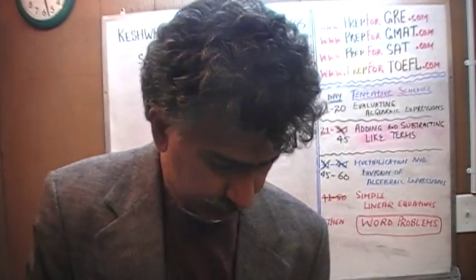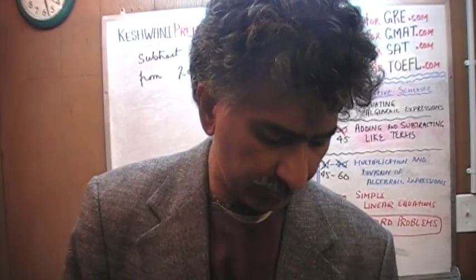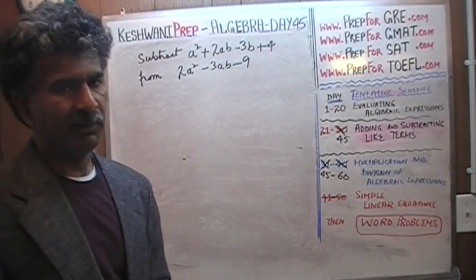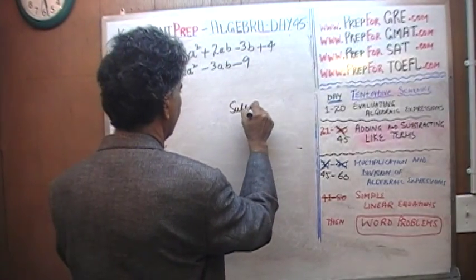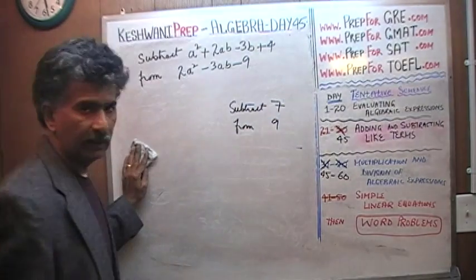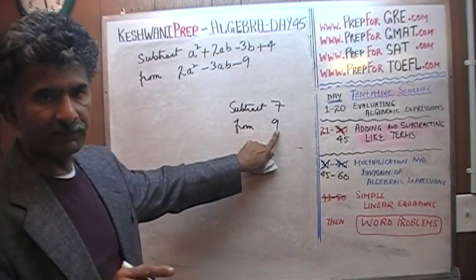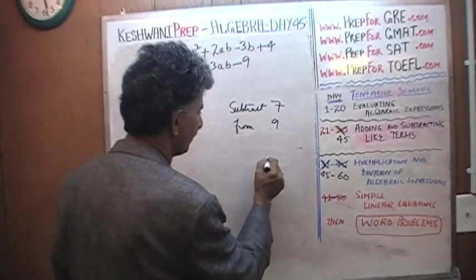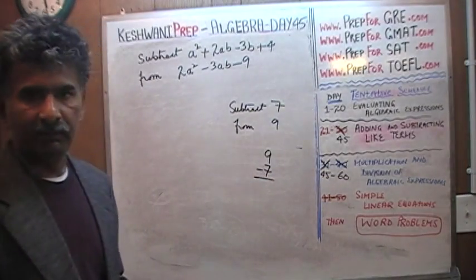First thing first — always remember that when you are asked to subtract one expression from the other, it is just like being asked to subtract a number from another number. For example, if somebody tells you to subtract 7 from 9, even though 9 appears later in the sentence, when you actually do the subtraction, 9 goes first and then 7.